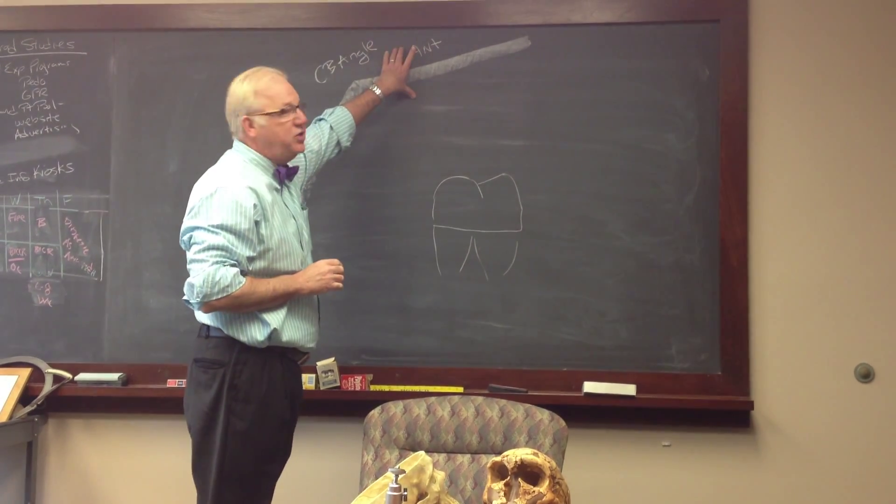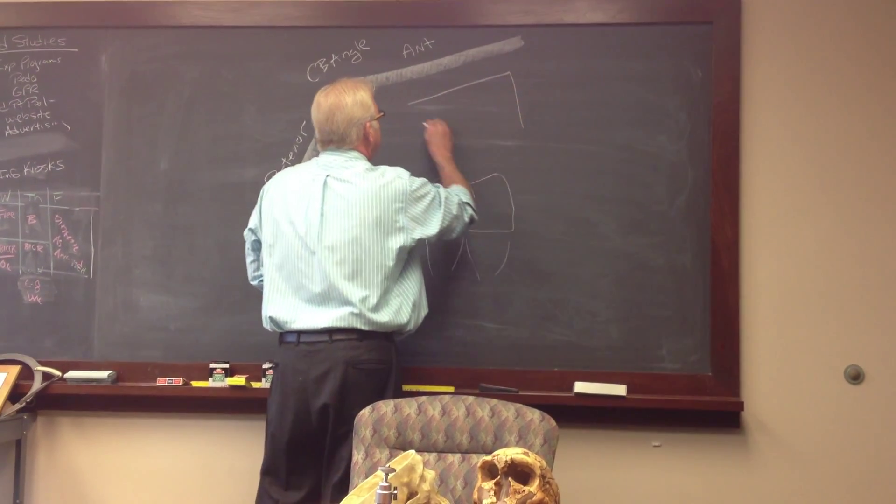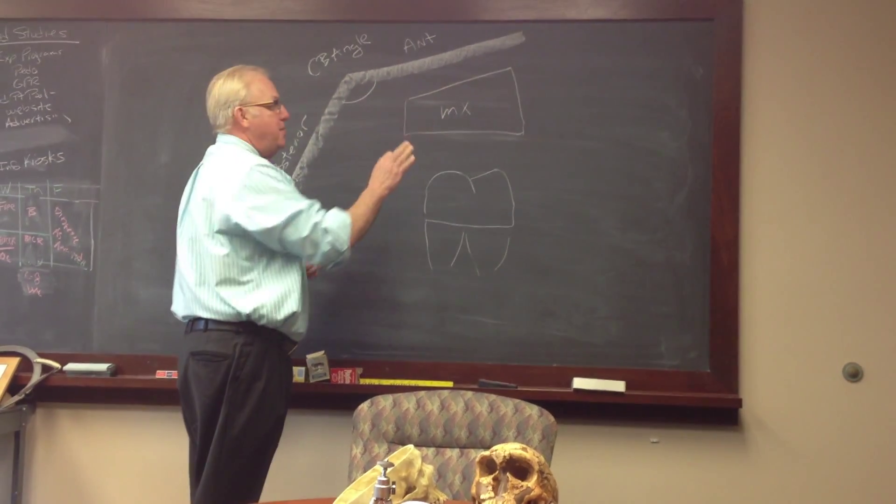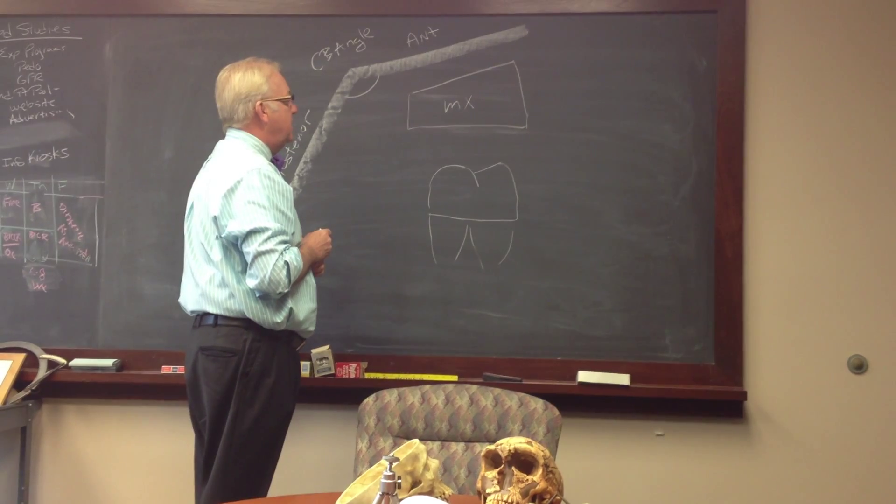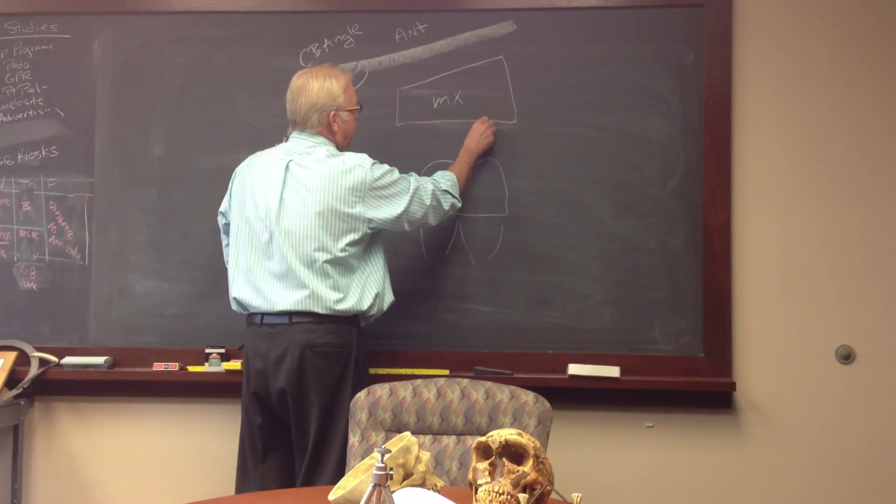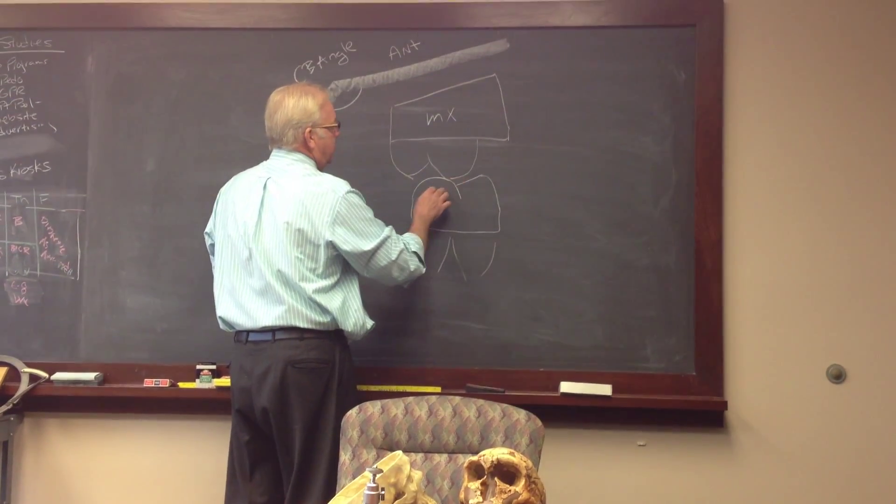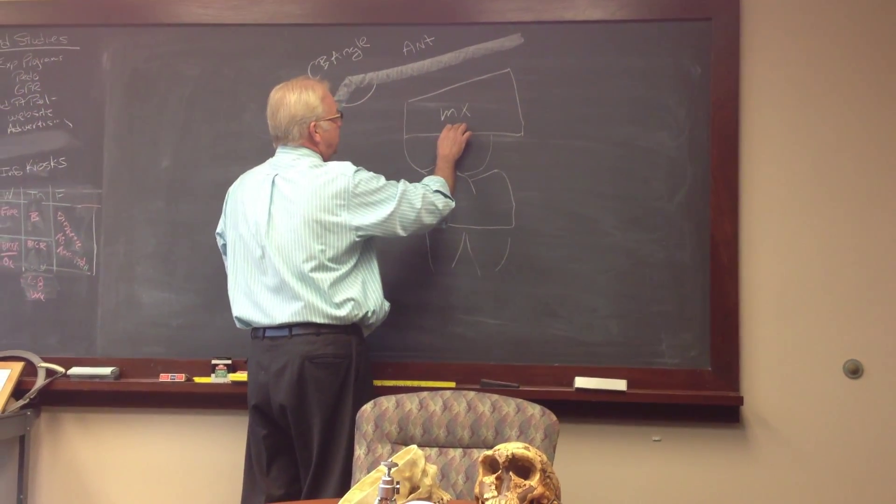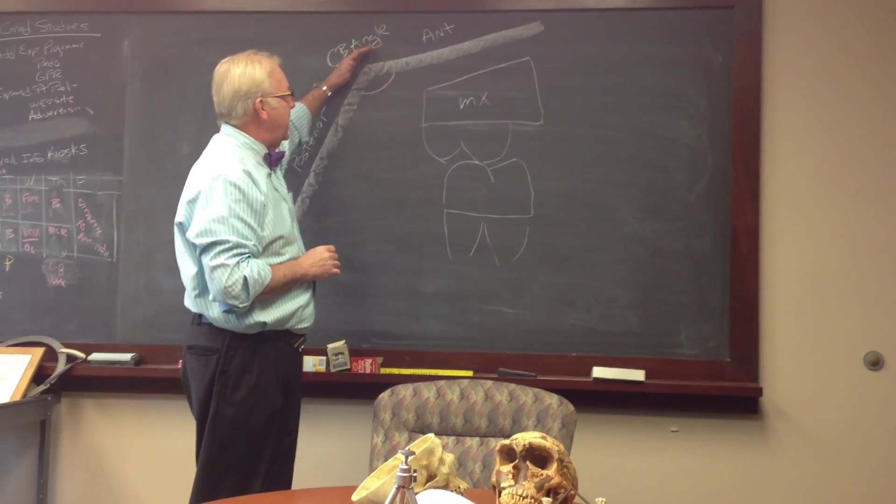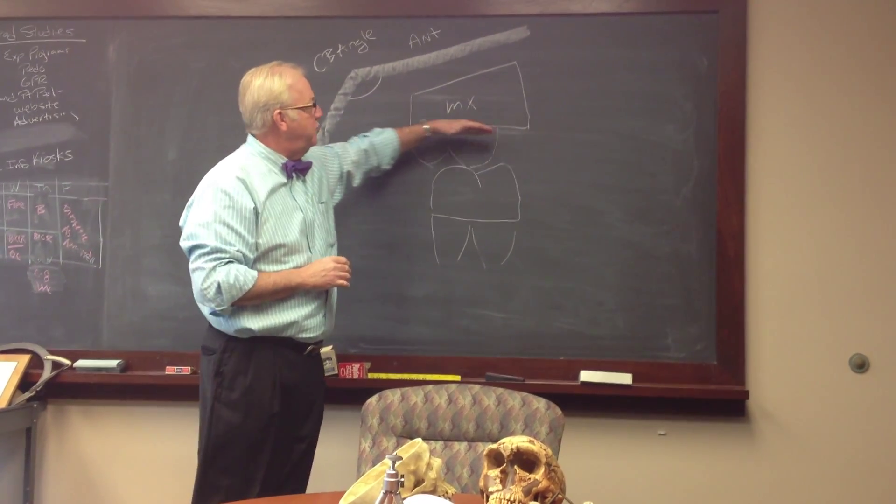Now, associated with the anterior cranial base is the structure we call the maxilla. And embedded in the maxilla are the structures we call the teeth. So if we have the maxillary first molar tooth here, slightly big compared to the maxilla, but you get the idea. The position of the maxillary first molar is determined in part by the cranial base angle, the position of the maxilla, and then the position of this tooth within that bone.